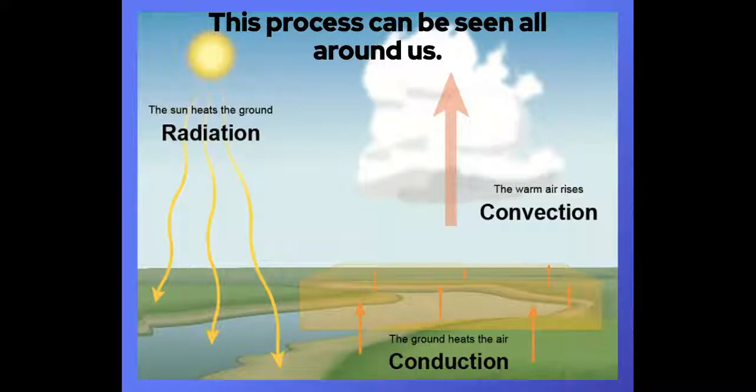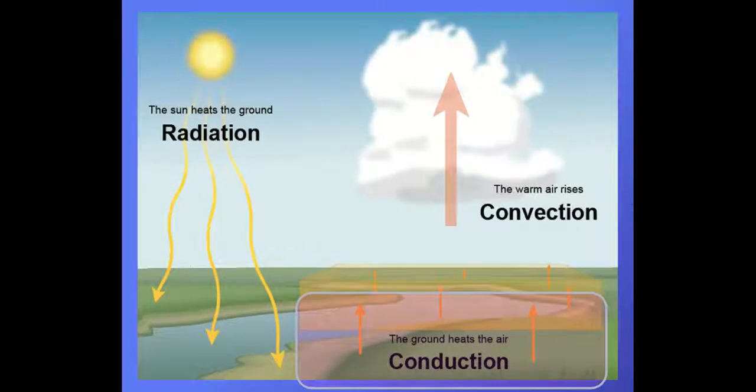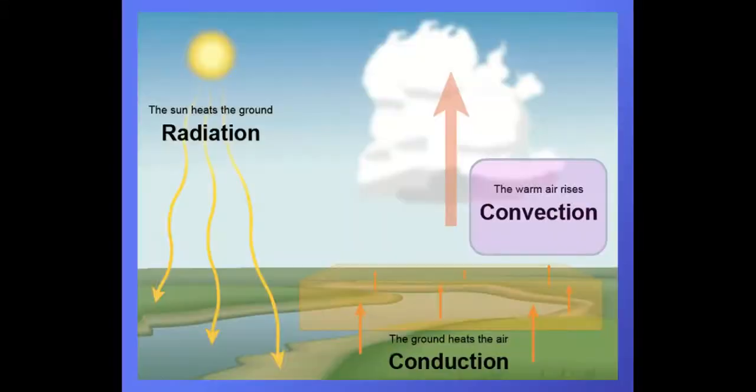Now this process of convection and conduction can be seen all around us and you can even see it if you look outside on a sunny day. So the sun is going to heat up the ground through the radiation and that heat is going to be felt on the ground. But then the heat is going to be passed on or transferred to the air and the air is going to be warm. So the warm air will be less dense and it will rise and that process is called convection. So you see this even outside.